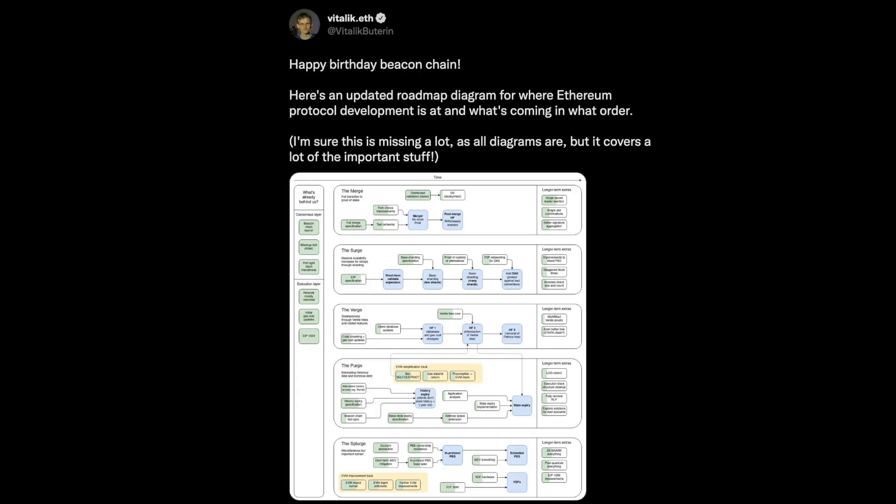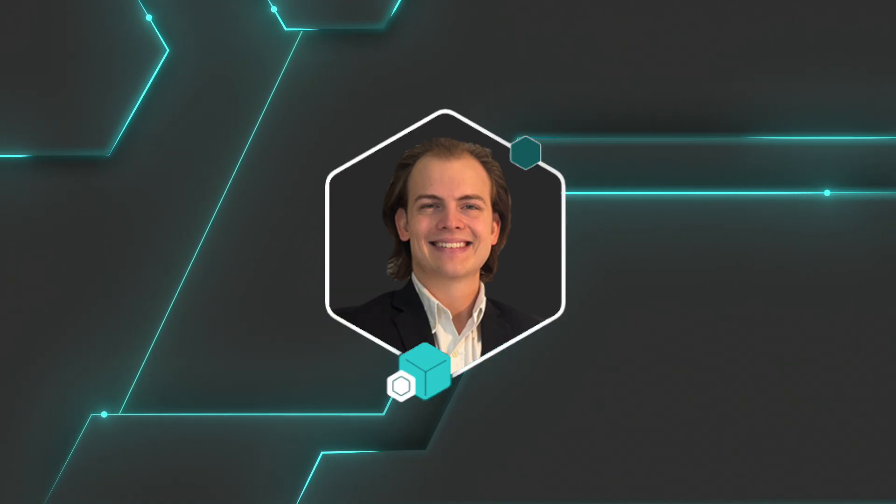In December 2021, Vitalik first tweeted about the ETH 2.0 roadmap, and the developers have been making solid progress on it ever since. Today, I will be explaining the five major upgrades to bring us the future of the blockchain we know and love. I'm Jack, and on ETH the Blocks, we help Web 2.0 developers transition into Web 3.